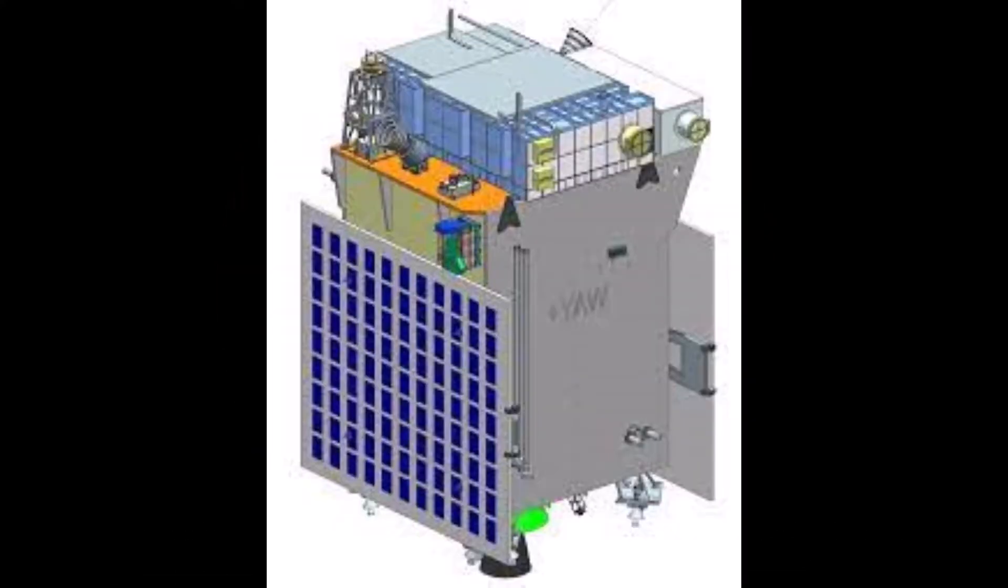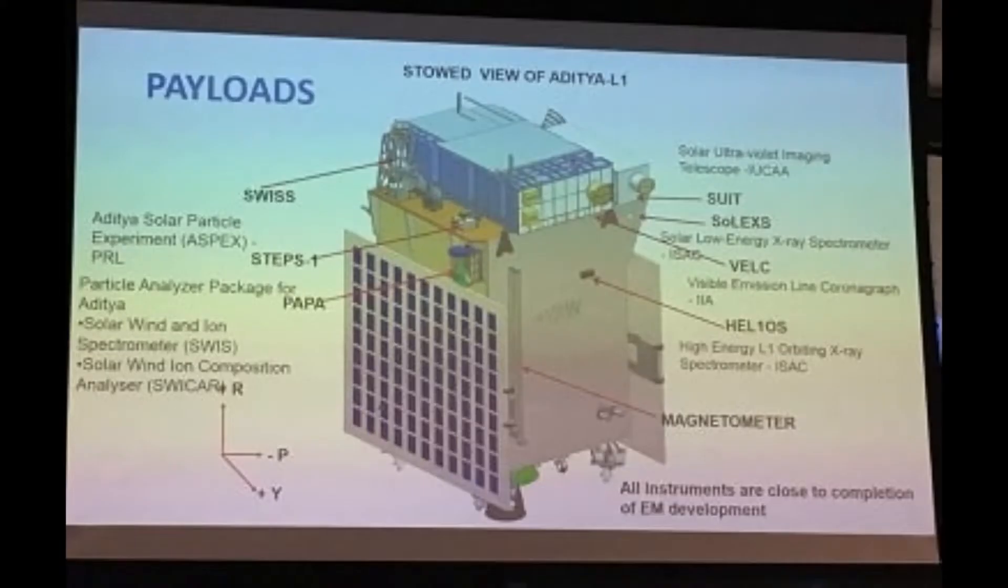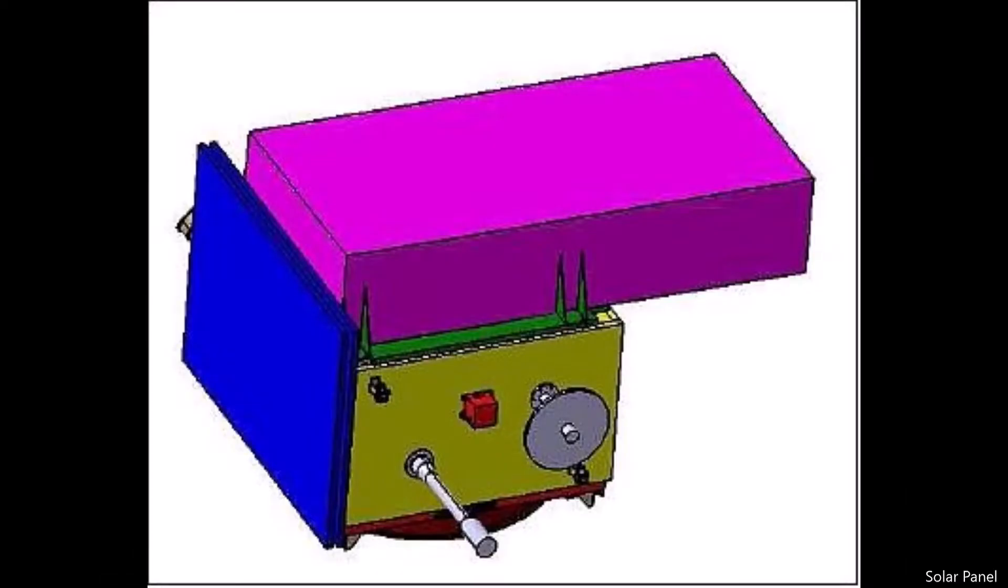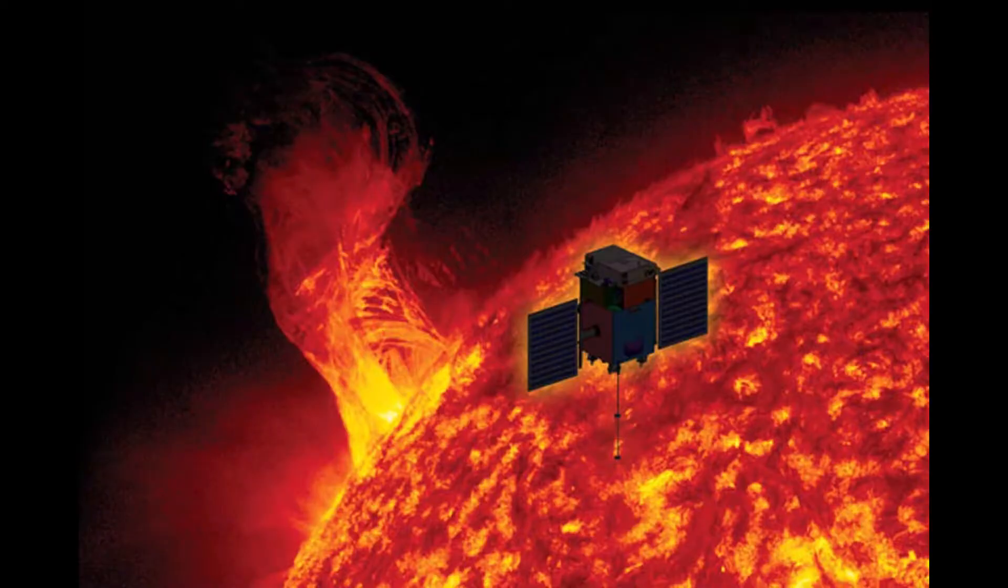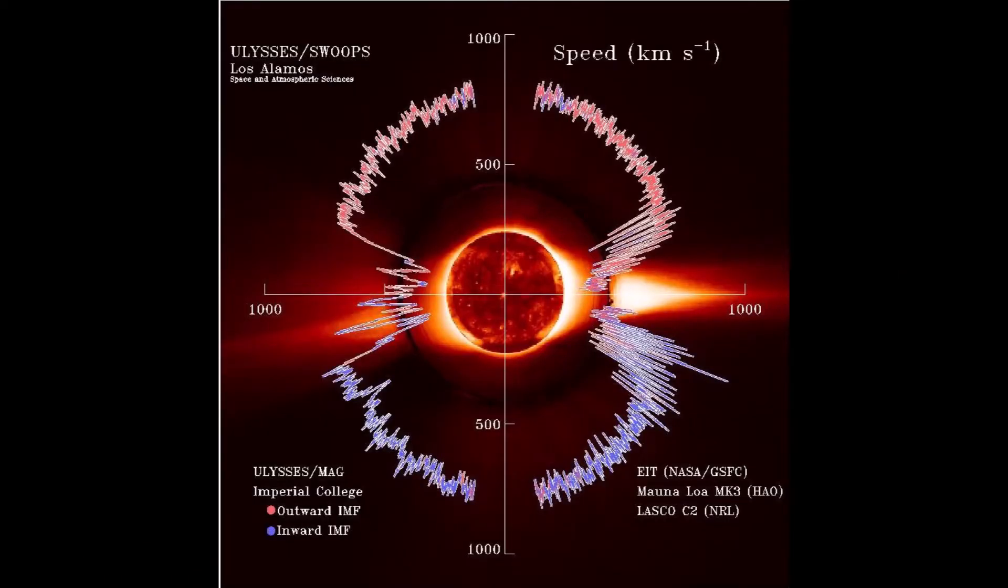The 1500 kg satellite carries seven science instruments with diverse objectives including coronal heating, solar wind acceleration, coronal magnetometry, monitoring of near UV solar radiation and many more.